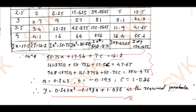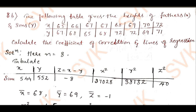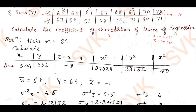Moving on to the next problem: the table gives heights of fathers and sons, where x is the father's height and y is the son's height. There are n = 8 data points. We need to calculate the coefficient of correlation r and the lines of regression: y on x, and x on y.